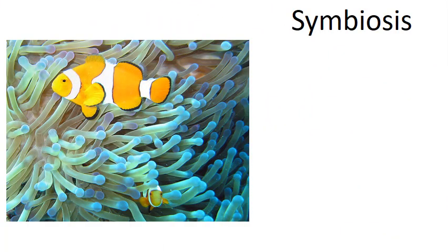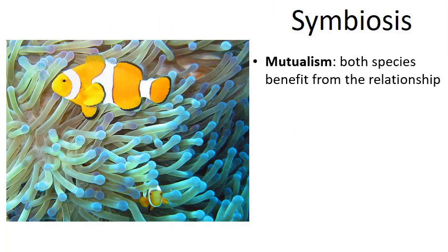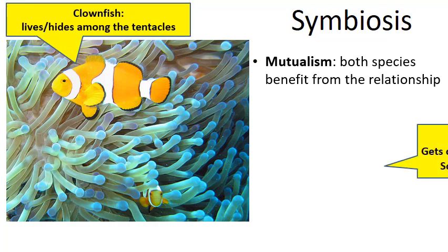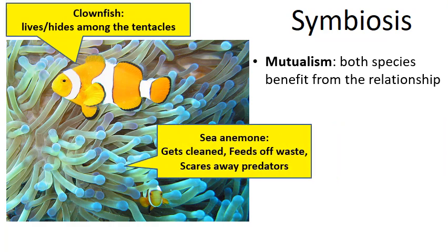In mutualism, both species benefit from living in a close relationship. A classic example is the clownfish and the anemone. The clownfish lives and hides among the anemone's tentacles, gaining a home. In return, the clownfish cleans the anemone, the anemone feeds off waste from the clownfish, and the clownfish scares away predators that might attack the anemone. They both benefit.